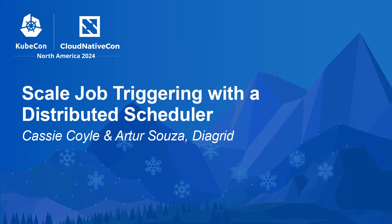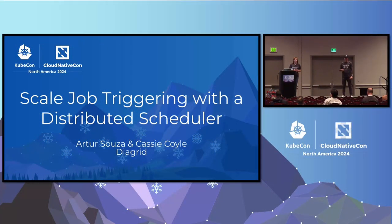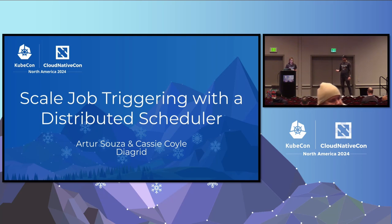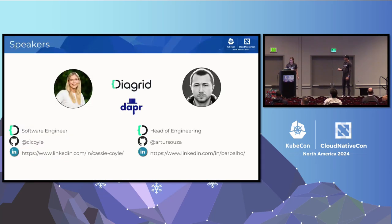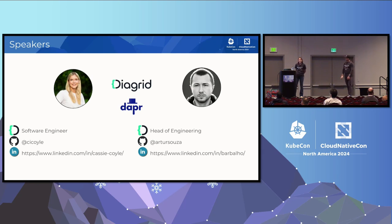Welcome to this presentation on how to scale job triggering with a distributed scheduler. We're going to present it in the context of the DAPR project and how that helped us solve some scaling problems. My name is Arthur Susson, and I'm Cassie Coyle, a software engineer at Diagrid, where I am an approver for the DAPR runtime project along with the Java SDK.